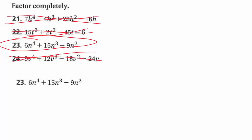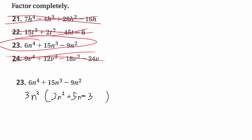The reason we focus on 23 is that most things we model with polynomials use quadratics as the most common form. Even though this isn't a quadratic, you can turn it into one because they all have n's. Remember, the first thing you should try is pulling out a GCF. We can pull out n squared, and all the numbers are divisible by 3. So divide by 3 and n squared. Divide to get 2n squared, 5n, and minus 3 inside. This is the factored form, but they said factor completely — check to see if you can factor it further.